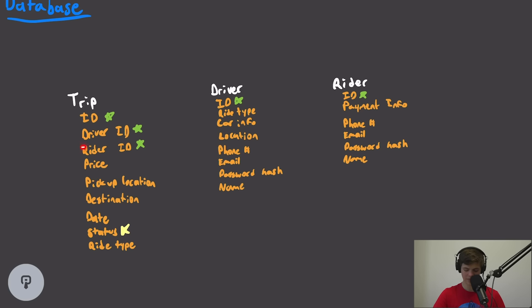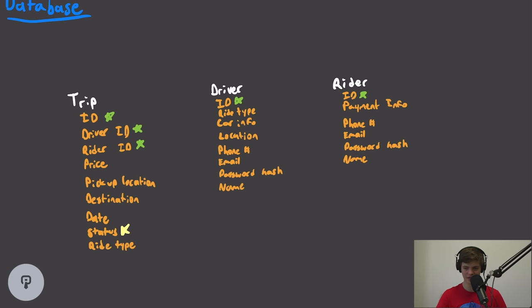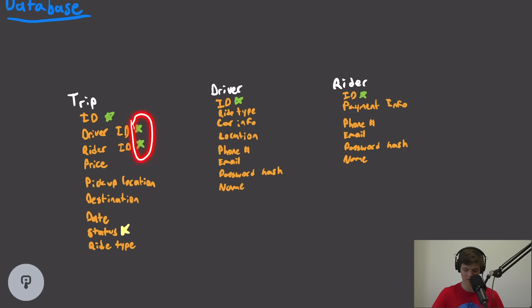For each trip, we need the rider ID and driver ID, the price, location, and destination, along with a date. We'll also need the ride type so we can assign the rider the correct driver, and a status — whether the drive is in progress, canceled, completed, waiting for a driver, etc. A common query pattern would be: show me all of the in-progress trips associated with this driver, so we'll want to be able to look up status in the context of a specific driver or rider ID.